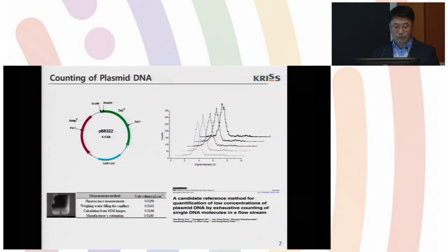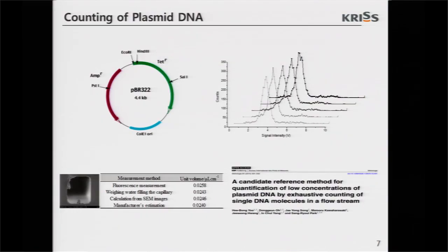Next was counting of plasmid DNA. Plasmid DNA is only 4.4 kilobases. It's 10 times smaller than the lambda DNA. So we had to improve our optical system and data processing for counting of plasmid DNA. And in assignment of copy number concentration of plasmid DNA, accurate measurement of sample volume is very important. So we estimate the sample volume by four different methods, including electron microscopy imaging and so on. The result was reported in Metrologia in 2014, five years later after the first report.